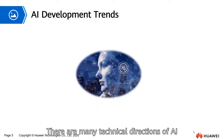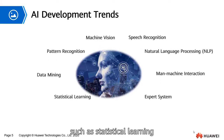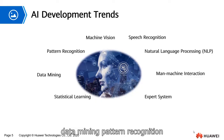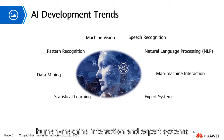There are many technical directions of AI, such as statistical learning, data mining, pattern recognition, machine vision, voice recognition, natural language processing, human-machine interaction, and expert systems.